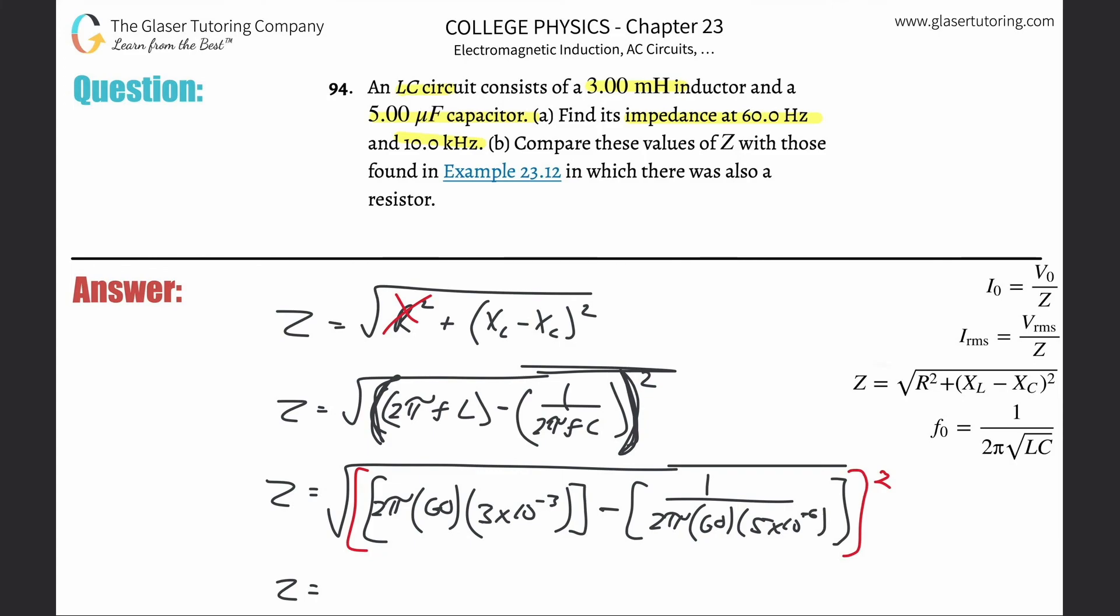So let's do this. So 2π times 60 times 3 times 10 to the minus third. We get that value. Then minus now, parenthesis, 1 divided by parenthesis 2π times 60 times 5 times 10 to the minus sixth. Close the parenthesis, and then take your result and square it. And then we square root that value, and we get 529 ohms.